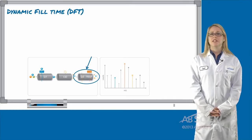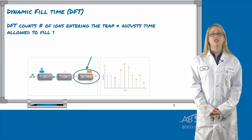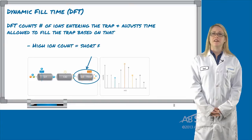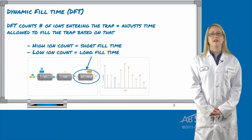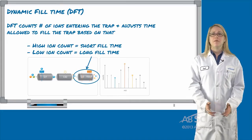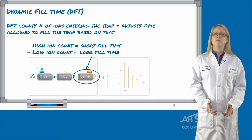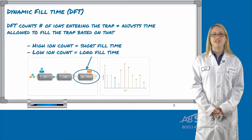The dynamic fill time is the time allowed for the trap to fill with ions before they are scanned out for detection. If there is a high ion count, a shorter fill time is activated, while if there is a low ion count, a longer fill time is activated. DFT should always be activated in an EPI experiment. Dynamic fill time is data acquisition optimization on the fly and will ensure the best quality spectra for your experiments.